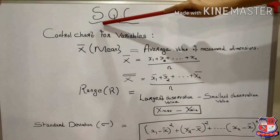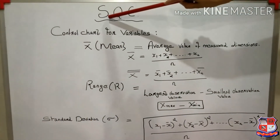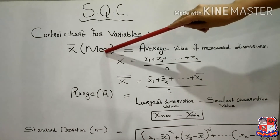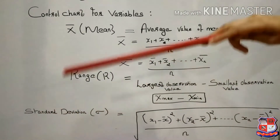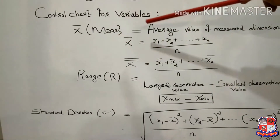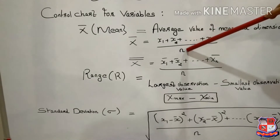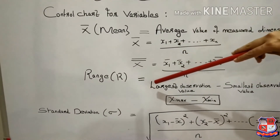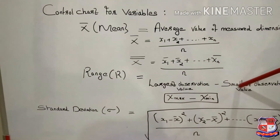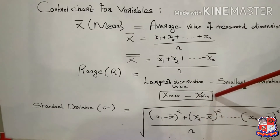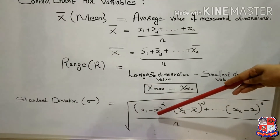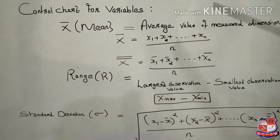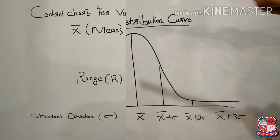In Statistical Quality Control, we use statistical tools for controlling quality. The control variables used are: x̄ (mean), R (range), and σ (standard deviation). x̄ is calculated as the sum of measured dimension values divided by the number of dimensions: (x1 + x2 + … + xn) / n. Range R equals the largest observed value minus the smallest observed value: x_max − x_min. Standard deviation σ equals the square root of the sum of (xi − x̄)² divided by n.